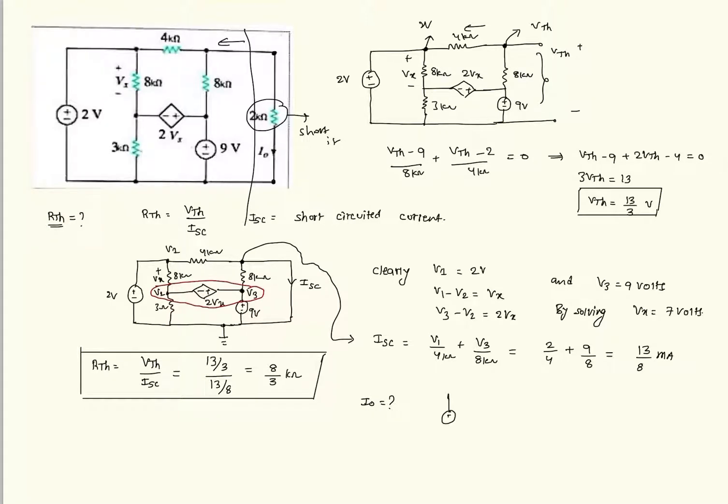Thevenin's equivalent is VTH is 13 by 3. RTH is 8 by 3 kilo ohm. Here it is 2 kilo ohm. Now we need to calculate I naught.